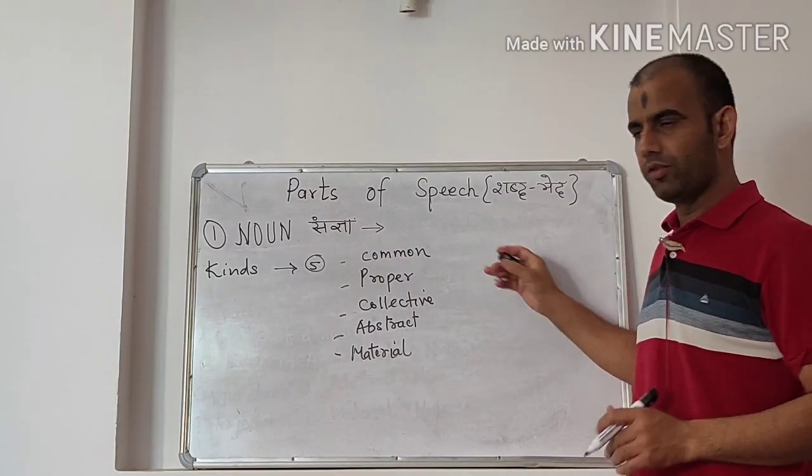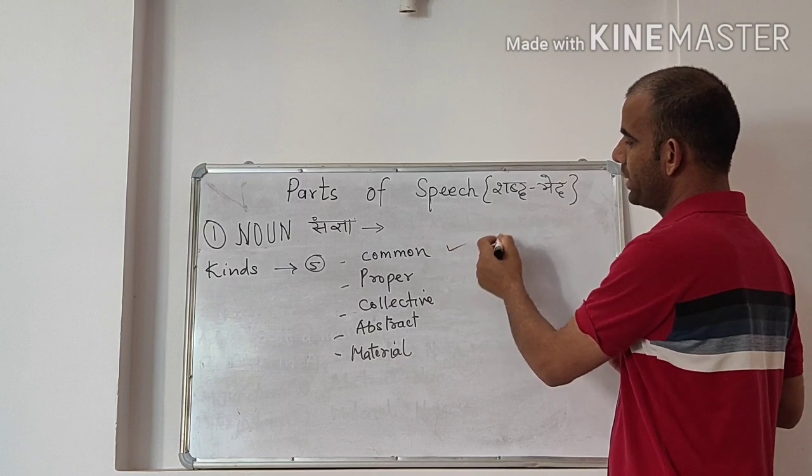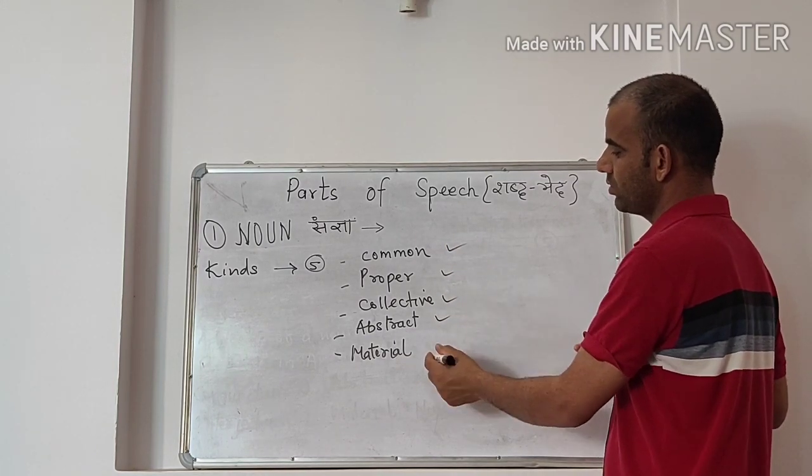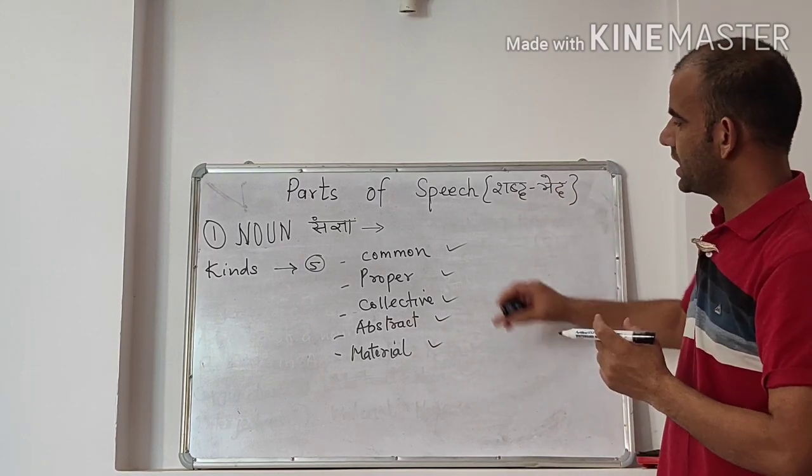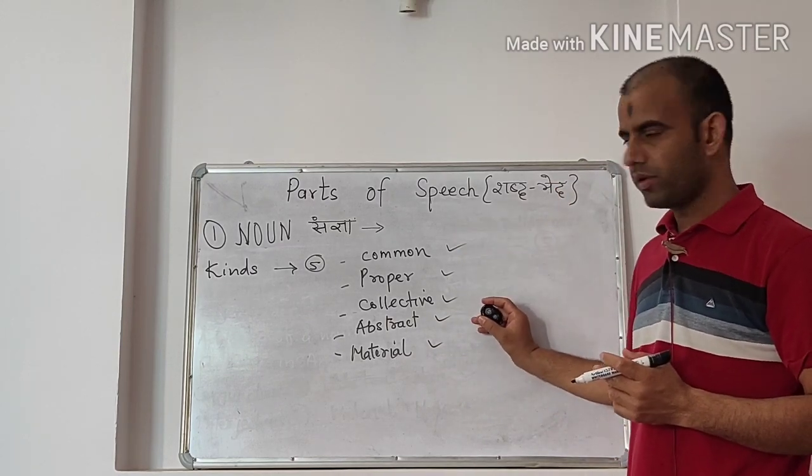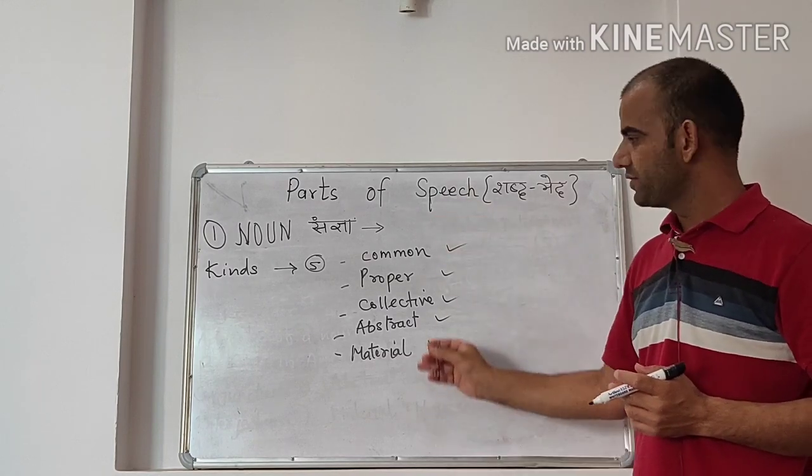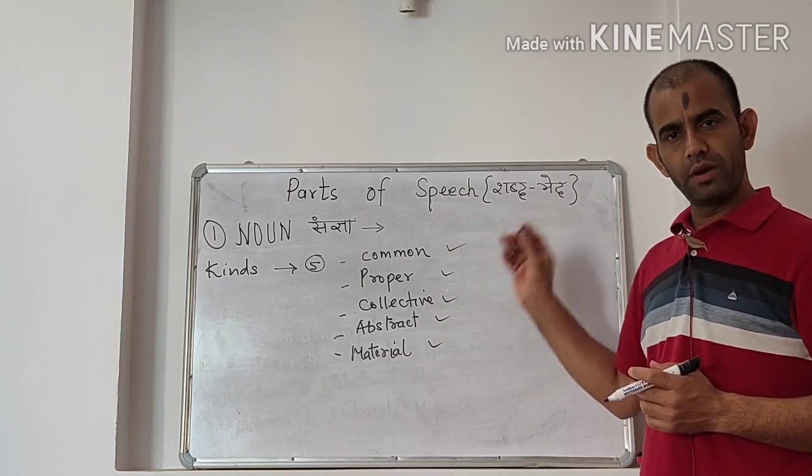Now there are five kinds of noun and these are common noun, proper noun, collective noun, abstract noun and material noun. These are five types of noun and we will discuss all these five types one by one.